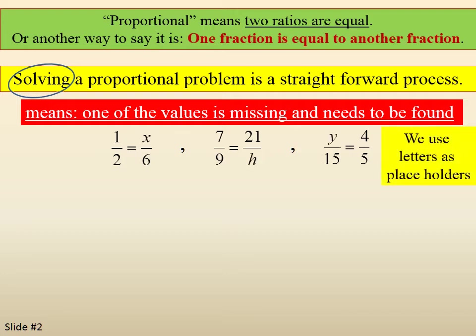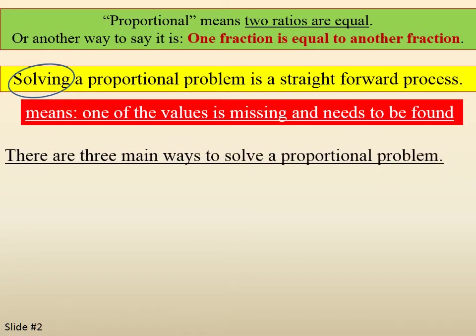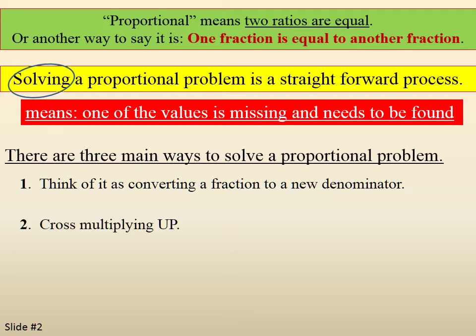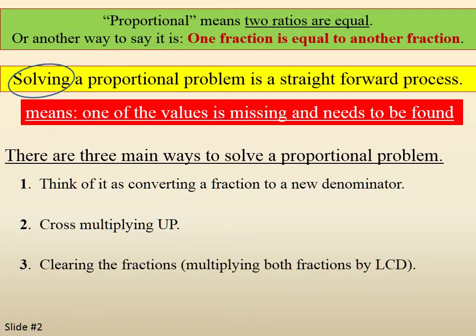We put letters in place of the missing piece as a placeholder. There are three main ways to solve a proportional problem. One, think of it as converting a fraction to a new denominator. Two, cross-multiplying up. And three, clearing the fractions by multiplying both fractions by the least common denominator.